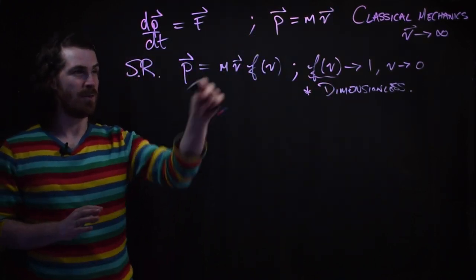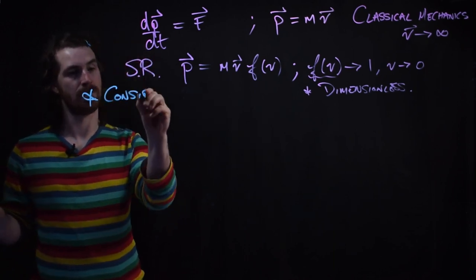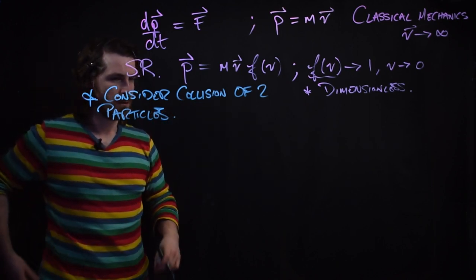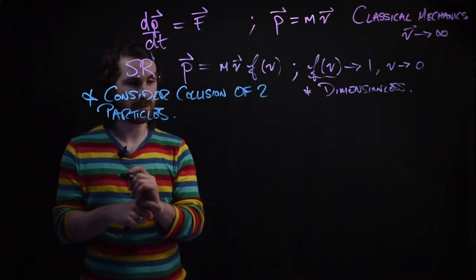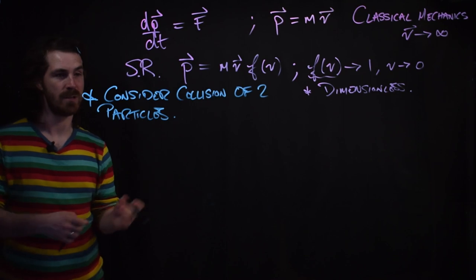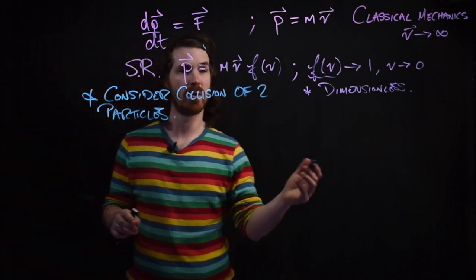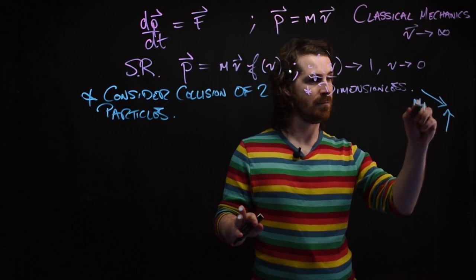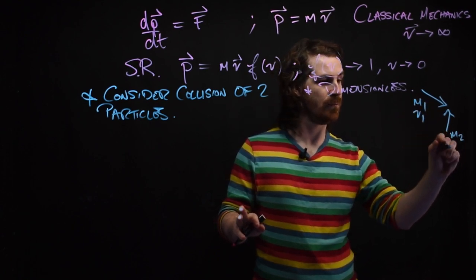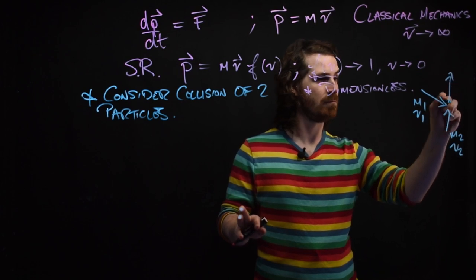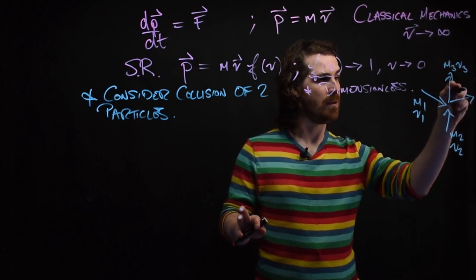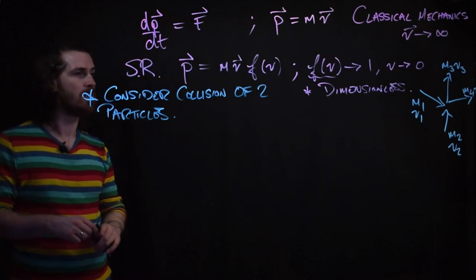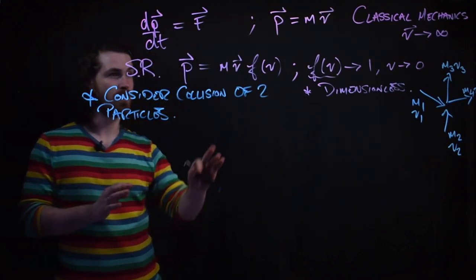So the job is to find what this function is, and to do so we consider the collision of two particles. Let's call them m1 and m2, with velocities v1 and v2. After the collision, they have masses m3 and m4, and velocities v3 and v4. We're going to let their masses change, and considering this collision will tell us what this function is.